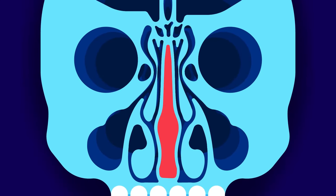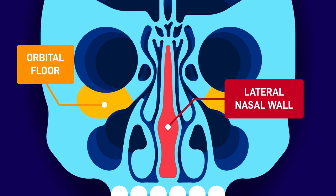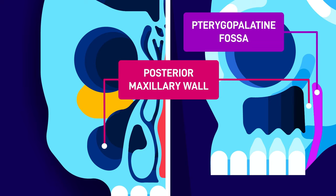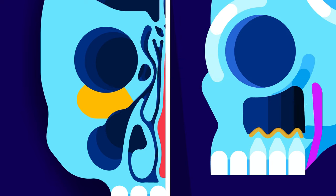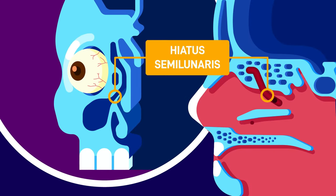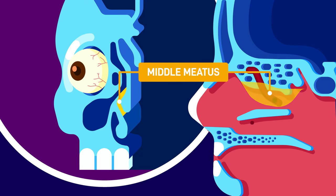The nearby structures of this sinus are the lateral nasal wall, the floor of the orbital bone, and the posterior maxillary wall, where the pterygopalatine fossa exists. The floor of the maxillary sinuses is close to the roots of the molar teeth.